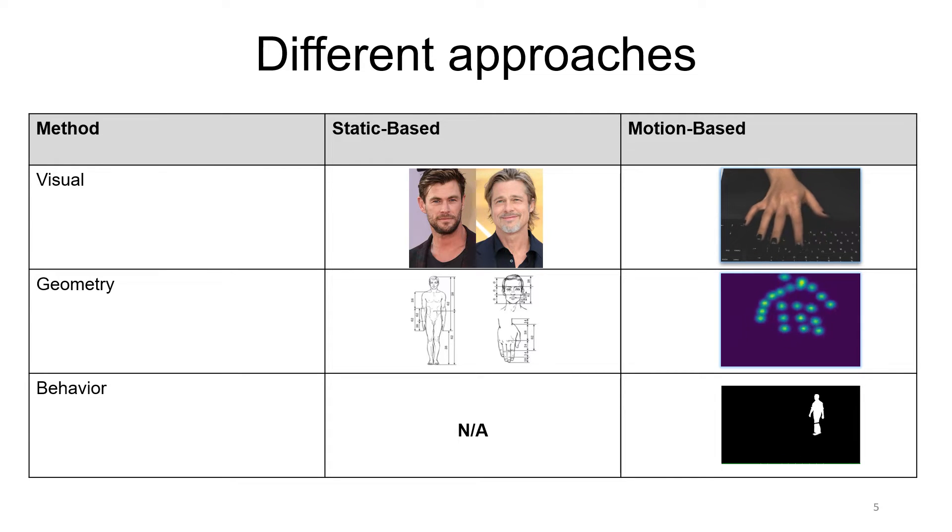We can identify a user by his characteristics in three different ways. First, visual, an image which is static-based or a video, which contains motion information.